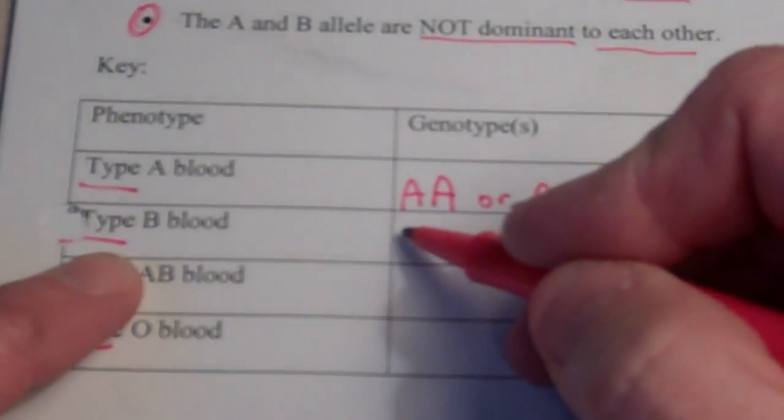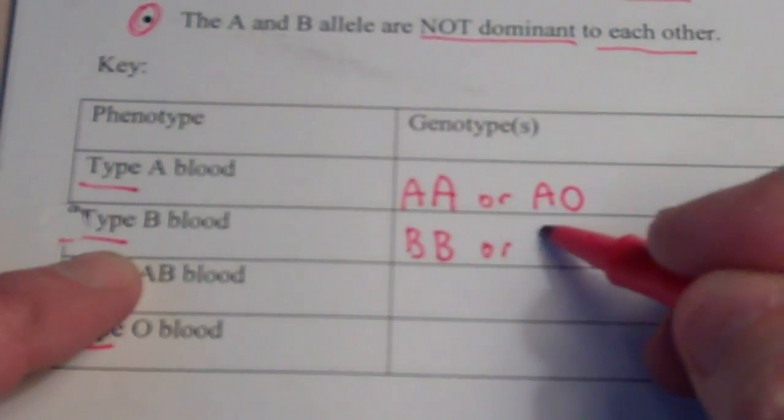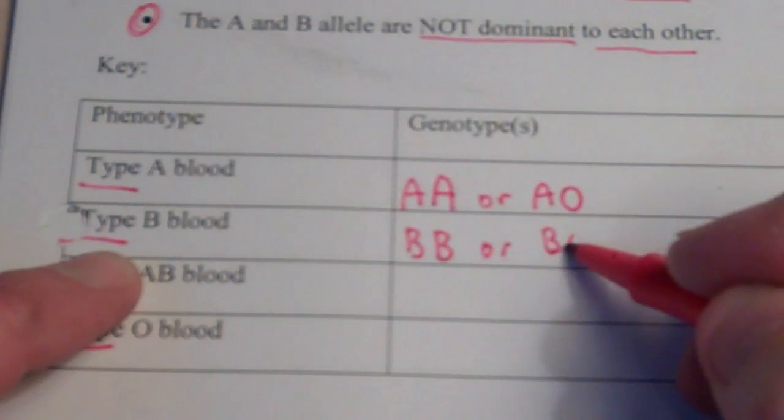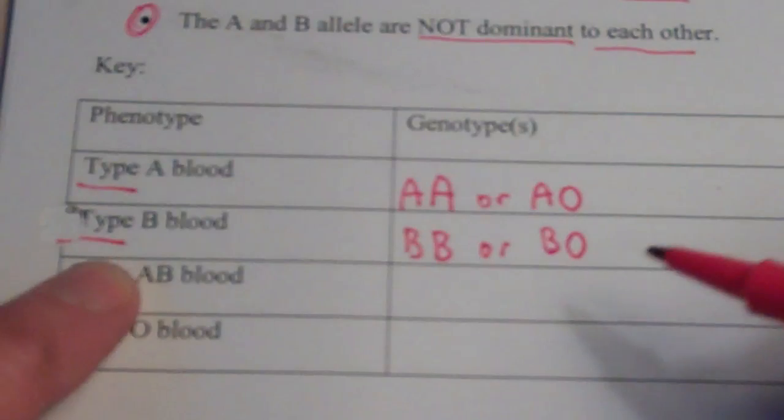If you're type B blood, you could get a B from one parent, B from the other parent. Or, you could get a B from one parent and an O from the other parent and that gives you BO. Sorry for you.